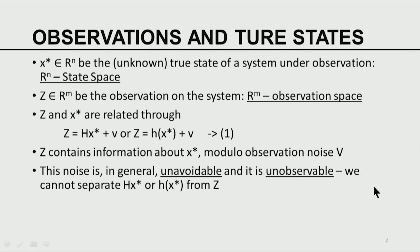Observation may be related linearly to the true state, or observation can be related to the true state non-linearly. In either case, there are going to be errors corrupting the observation. We are assuming the errors are additive in nature. That is a simple way of dealing with observational errors. This aspect of considering observational errors as an additive process has been around ever since the days of Gauss. If you want to know the true state of mother nature, you can only sense it through devices. The devices output Z; the input of the devices is x-star. So Z contains information about the true state x-star, but it is corrupted by additive noise. We say Z contains the information modulo the observation noise v.